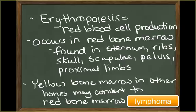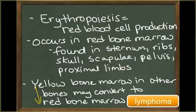The myeloid tissue is located in the vertebrae, the sternum, the ribs, the skull, the scapula, the pelvis, and the proximal limb bones. Other marrow areas contain yellow bone marrow. Under extreme stimulation, such as lymphoma, the yellow bone marrow will convert to red bone marrow to increase red blood cell formation.